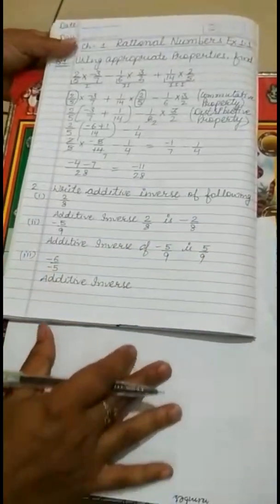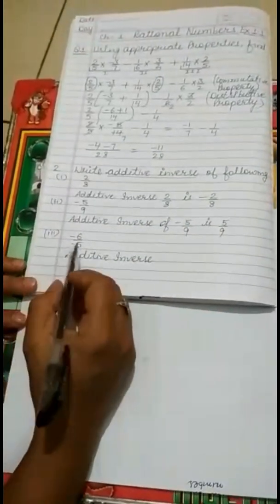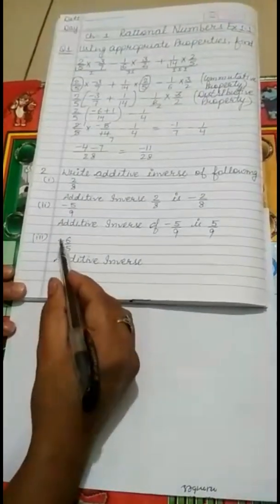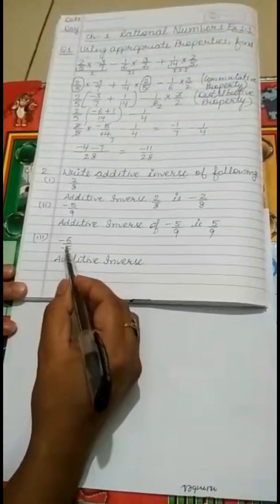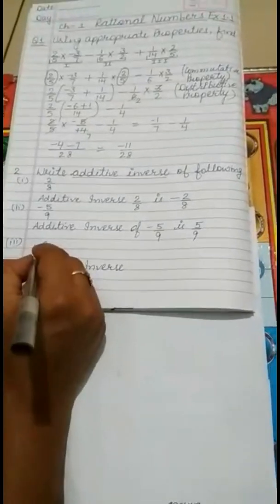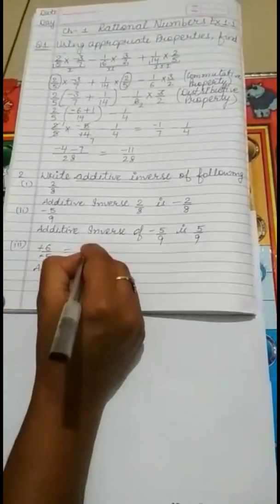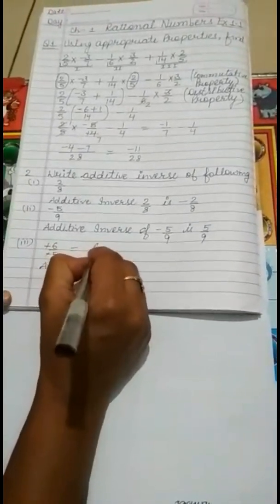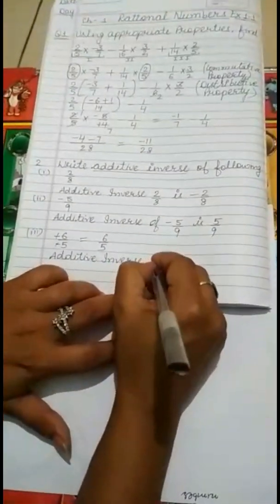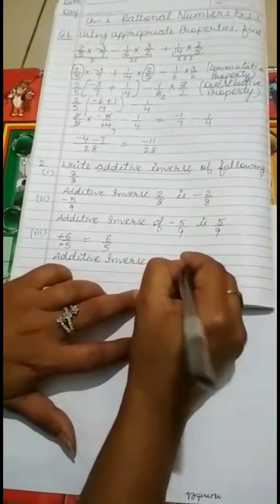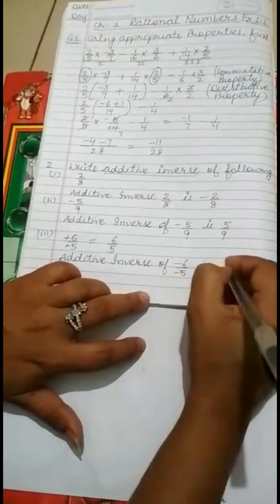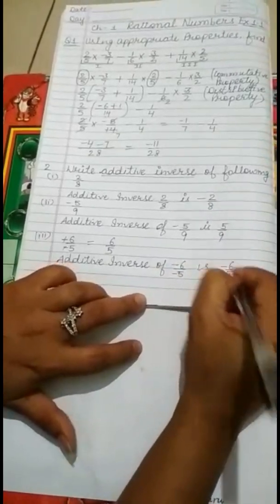For the next part, the additive inverse of minus 6 upon minus 5: since both numerator and denominator have negative signs, they cancel each other, making this actually a positive number. Therefore the additive inverse of minus 6 upon minus 5 (which equals positive 6 by 5) is minus 6 by 5.